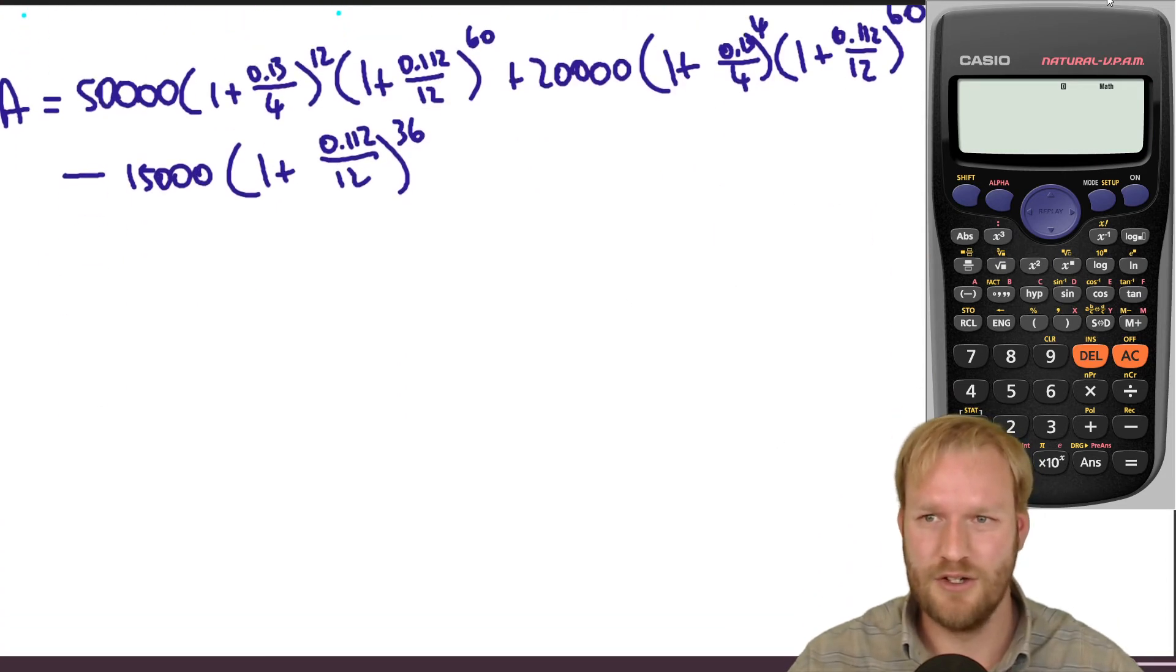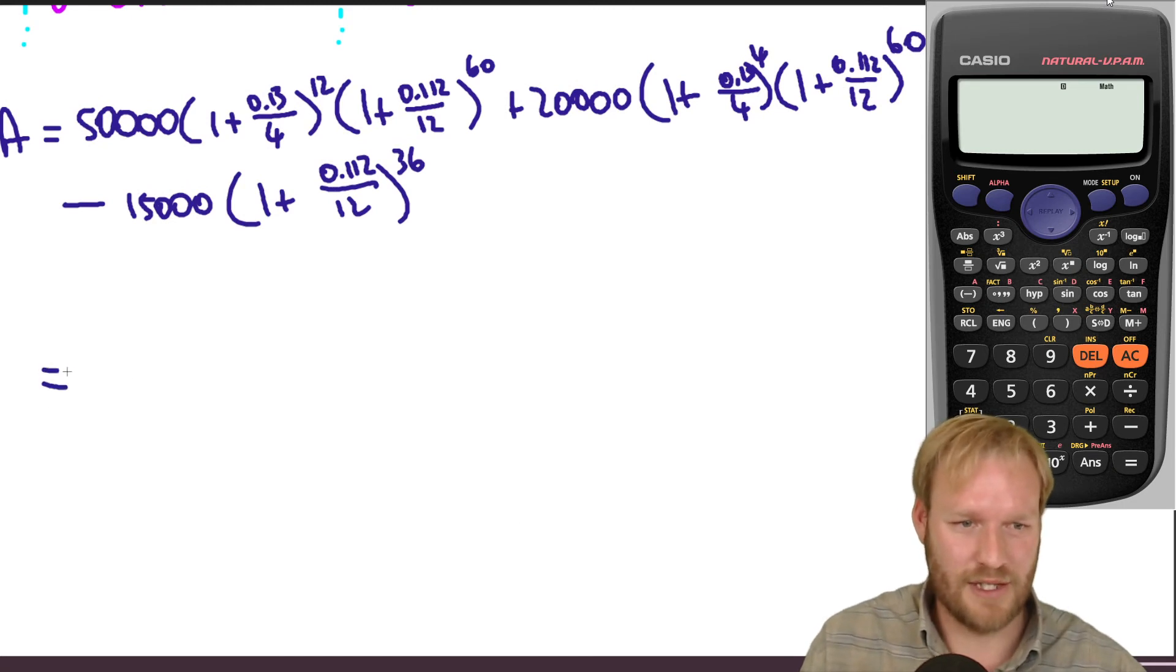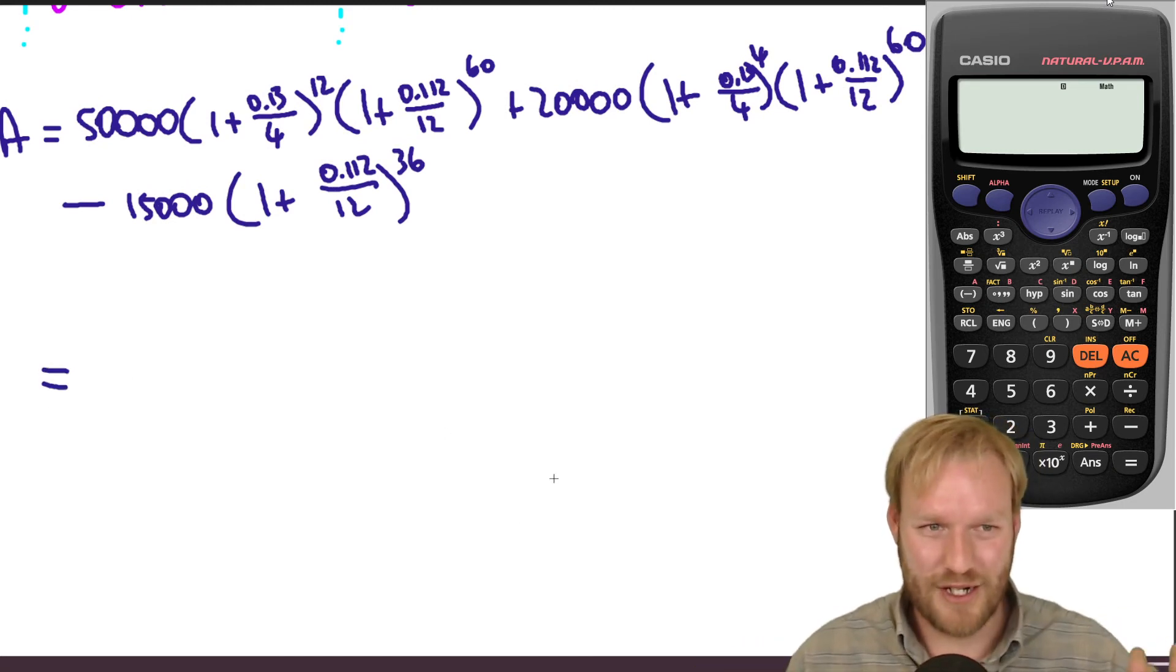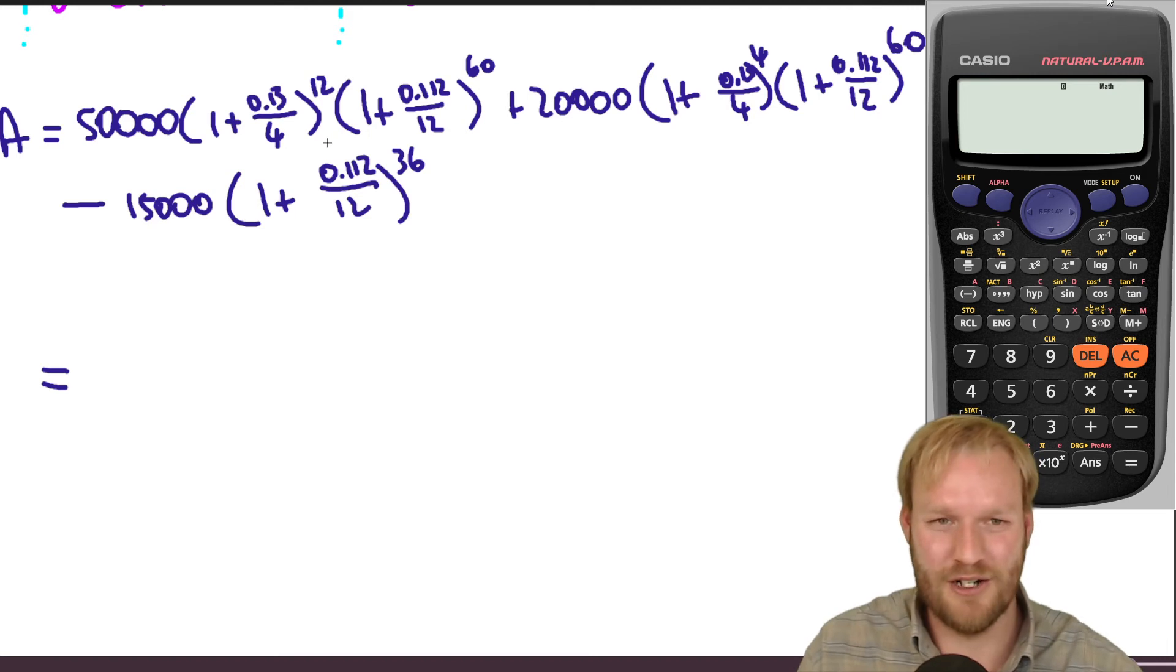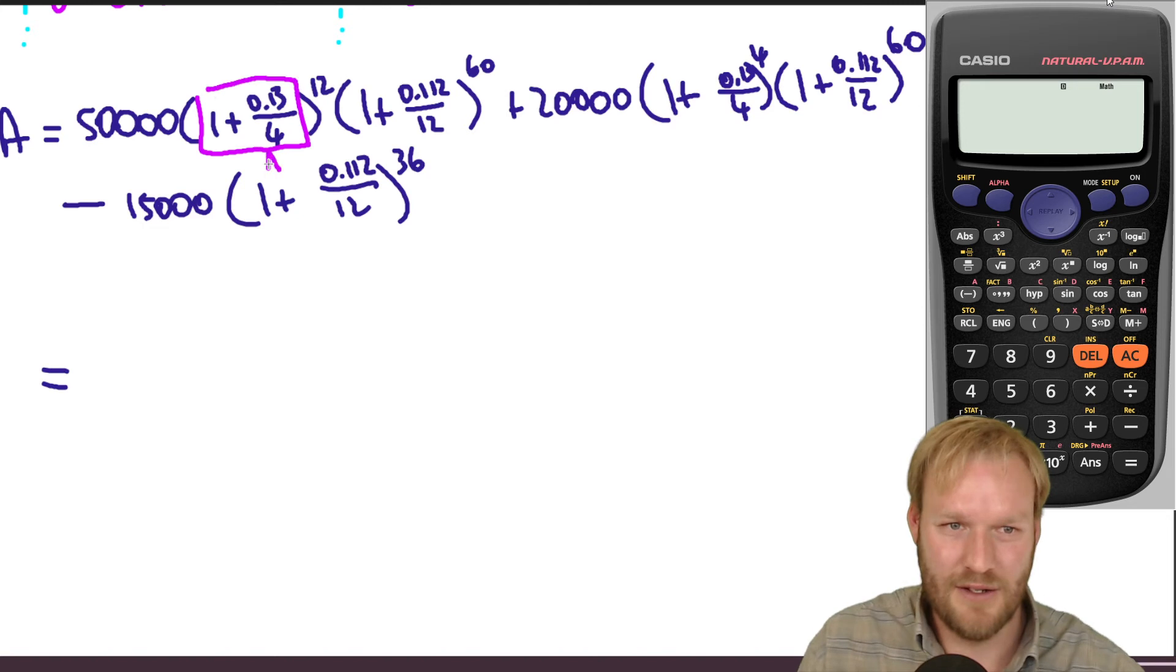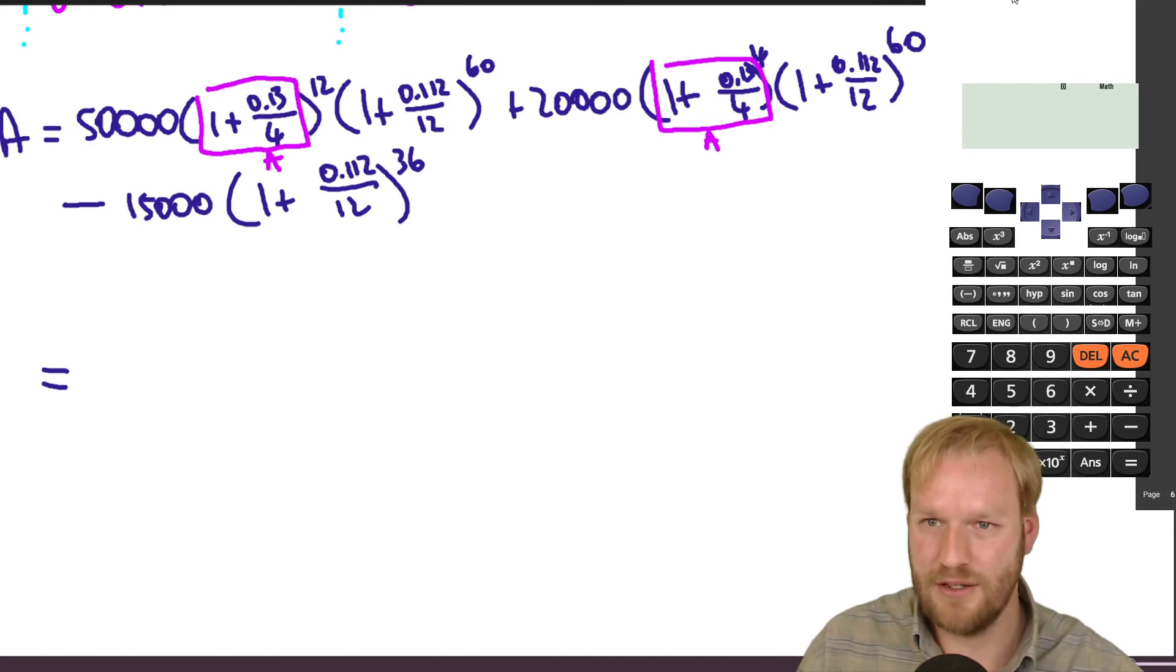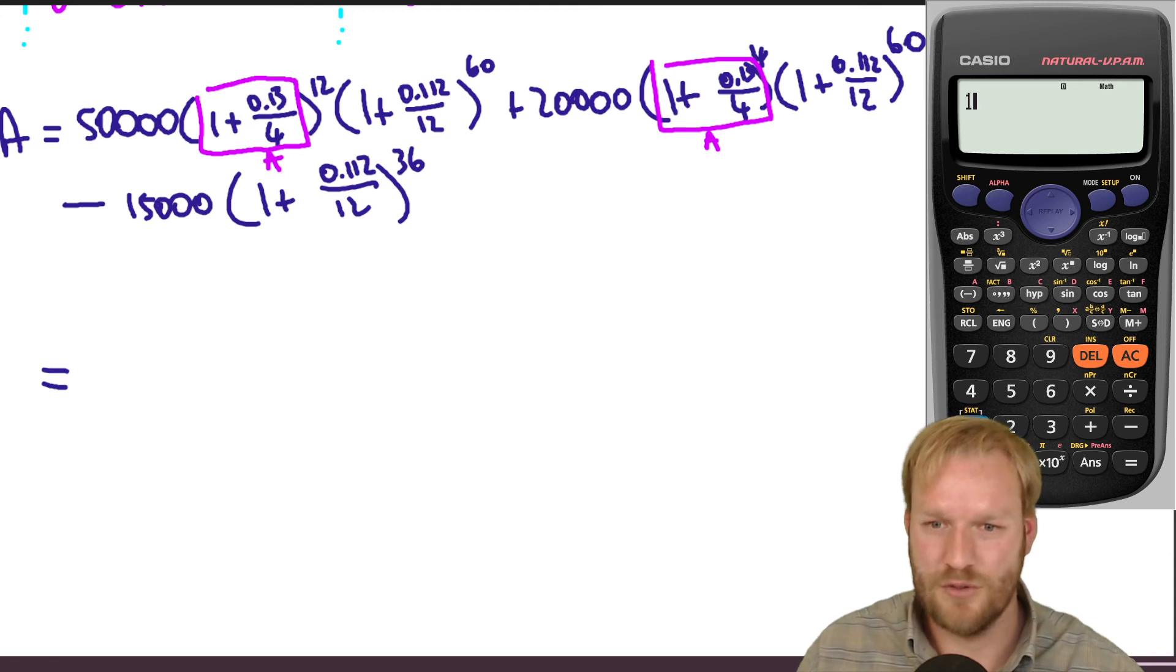So now if I scroll down, because that's the bit that we're interested in, we're going to plug that all into our calculator. Now, up to you how you want to do this. If you want to put this whole thing in, I think it is very useful to use our storage features in the calculator. So this bit in here, I'm going to call A because it comes up a few times. There it is. There it is. So in my calculator, which is I think over here, there we go. I've got one plus 0.13 over four, and I'm going to shift store that in A.